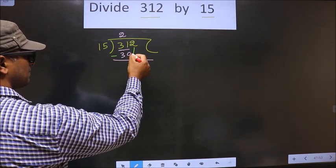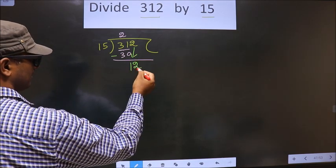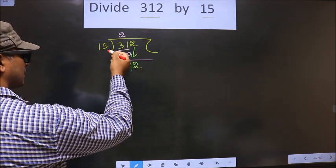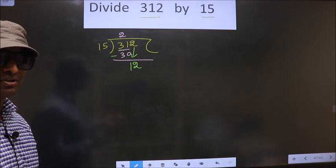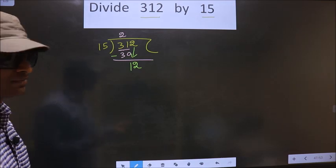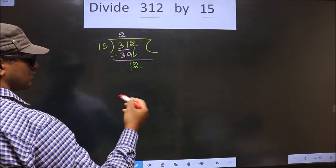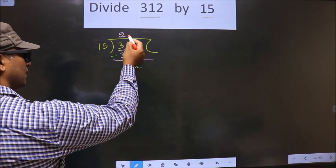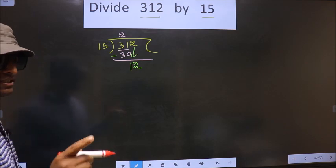Now you bring the beside number down, that is 2, making it 12. Well, now 12 is smaller than 15. This is where many do the mistake. And what do they do the mistake? See, here 12 is smaller than 15. So what they do is they put a dot and take 0 here, which is wrong.